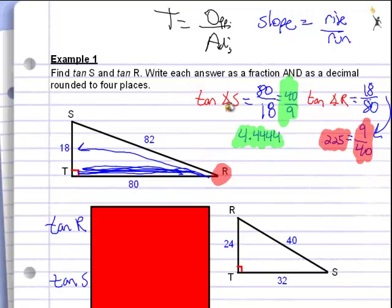I hope you were able to pause the video and look at the tangent of angle R and the tangent of angle S. First thing we want to do is identify our angle. Since tangent deals with the opposite divided by the adjacent, we identify what side is opposite of angle R. Hopefully you recognize that's the side of 32, divided by the adjacent side, which is 24.